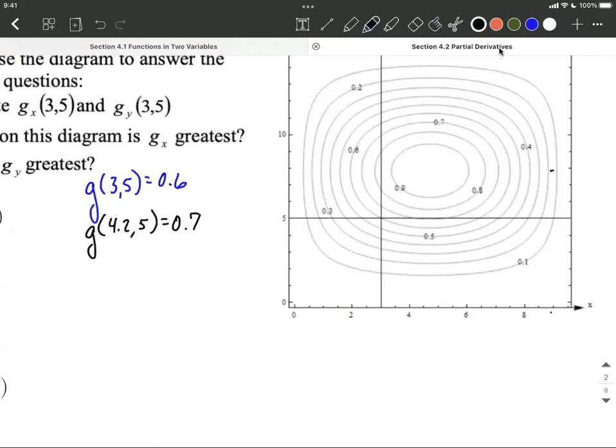Now if I want to estimate this rate of change, which is basically a slope, we can do y2 minus y1 over x2 minus x1, but we want to see how the z values change. So 0.7 minus 0.6 divided by the ones that changed were our x values. So 4.2 minus 3 goes in the denominator on this one. That's going to be 0.1 divided by 1.2, which is 1 twelfth exactly, or approximately 0.083.